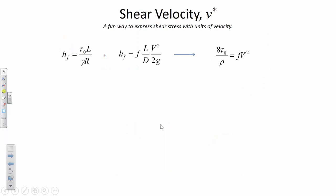Your homework assignment asks you to calculate the shear velocity for a couple of problems. The head loss due to pipe friction can be expressed in terms of shear stress — the resistance that the pipe puts on the water on a unit area basis. The units of shear stress are newtons per meter squared. Shear stress can be related to pipe friction, and hydraulic radius R is the area divided by the wetted perimeter.